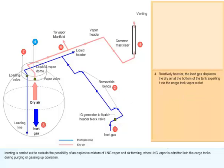Relatively heavier, the inert gas displaces the dry air at the bottom of the tank, expelling it via the cargo tank vapor outlet.